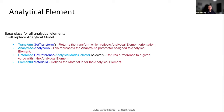In the AnalyticalElement base class we can find some generic methods — for example, GetTransform, which returns a transformation reflecting the analytical element's orientation, or a MaterialId property that lets you assign a material to an analytical element. There are also other methods like GetReference or GetAnalyzes — these are generic methods in the base class.